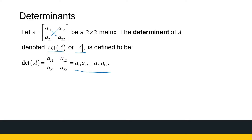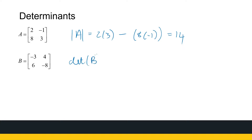Let's look at an example. If A is the matrix [2, -1; 8, 3], then the determinant of A is 2 times 3 minus 8 times minus 1, which is 6 plus 8, equaling 14. For matrix B, using either notation, the determinant is minus 3 times minus 8, minus 6 times 4 — that's 24 minus 24, which is 0.